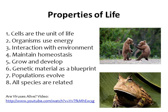So we went through the first eight properties of life. To review: cells are the smallest unit of life; organisms use energy; living things interact with their environment; living things maintain homeostasis; living things grow and develop; living things have genetic material that serves as a blueprint for traits and characteristics; populations of organisms evolve over time; and all species are related to each other.